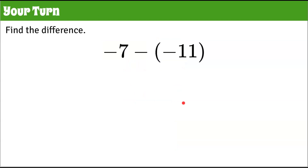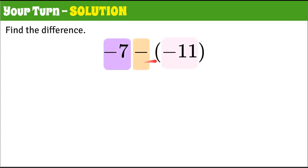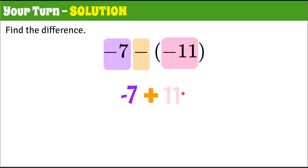Last one for you: negative seven subtract negative 11. Please pause, find the difference, and then come back and hit play. Welcome back. Using keep, change, opposite: keep negative seven, change to addition, and the opposite of negative 11 is positive 11. Negative seven add 11 is positive four.